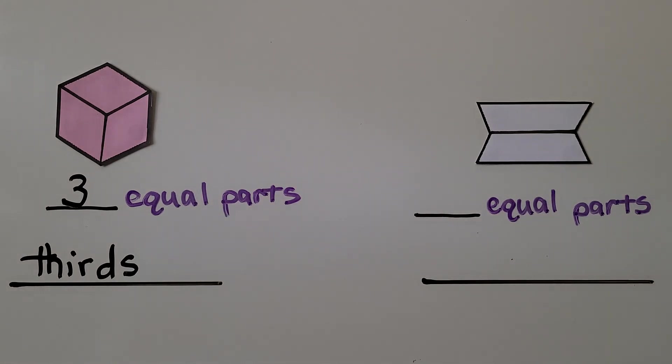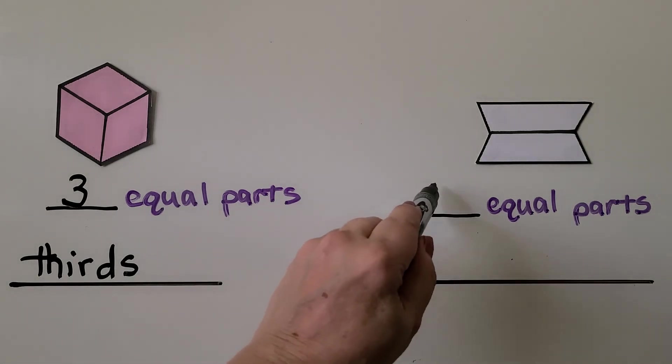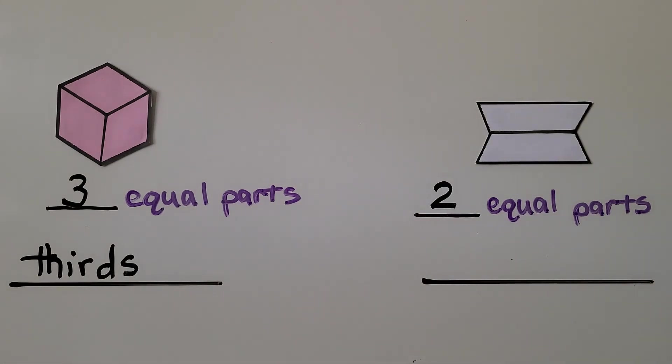Look at this shape. How many equal parts do we see? If you said two, you're right. And if there's two equal parts, they're halves.